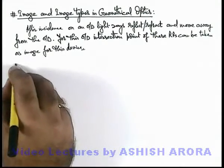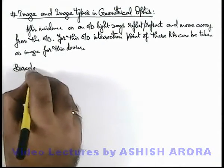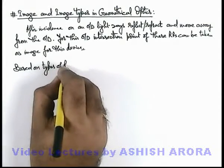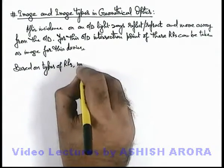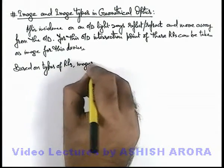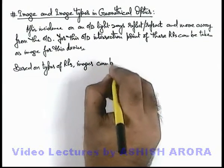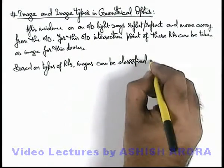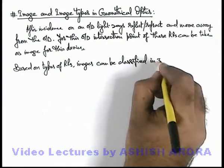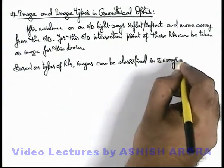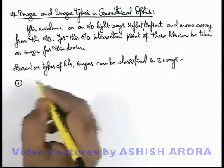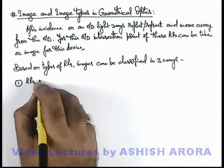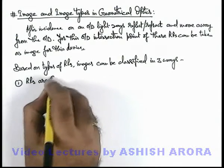Based on the types of reflected or refracted rays, images can be classified in three ways. The first case is when the RRs are converging.